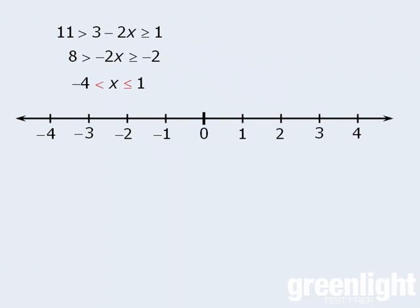To show this on our number line, we will examine the inequality in two parts. First, we have negative 4 is less than x, which is the same as x is greater than negative 4. We'll draw a circle around negative 4 and then draw an arrow to the right. Next, we have x is less than or equal to 1, so we'll add a dot at 1 and draw an arrow to the left. The entire set of solutions consists of all values of x that are greater than negative 4 and less than or equal to 1.